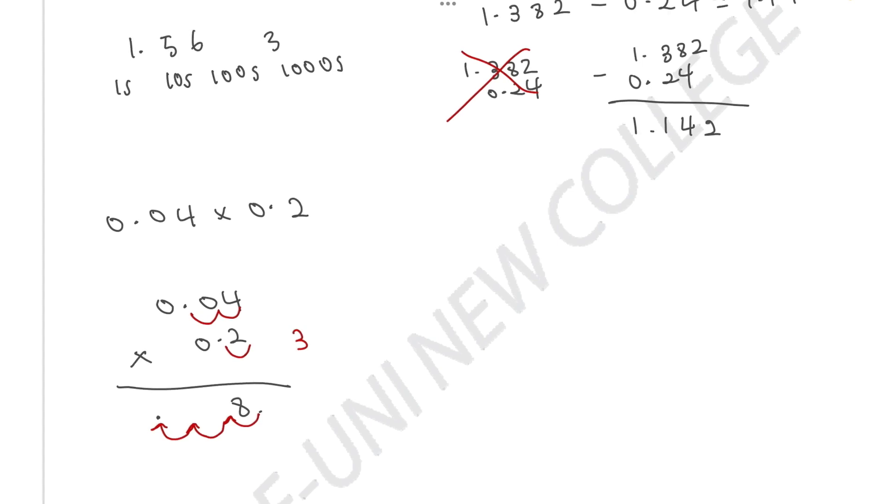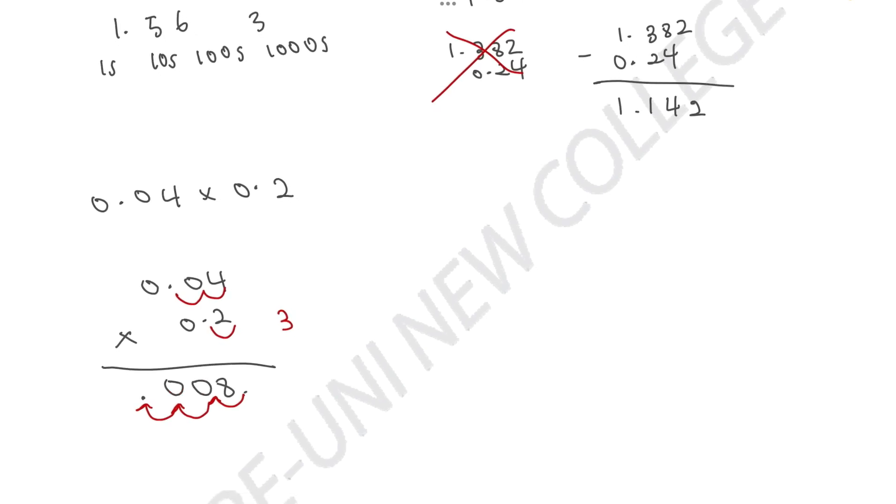So the decimal point will now be here. And in this place, we can just add 0 and 0 and 0 before. Therefore, 0.04 times 0.2 would equal 0.008. Now, I think we're ready to answer some questions.